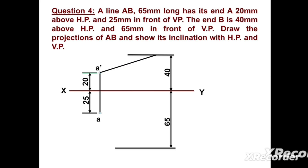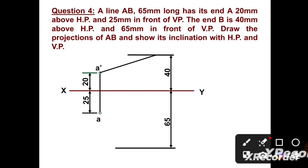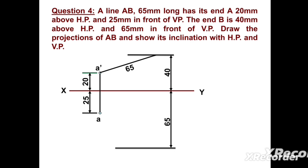Now we can draw one arc with a 65 mm radius, taking A' as the center point, to get an intersecting point. This point is B1'. Now we can draw a horizontal line passing from A' — this will give angle theta. The first answer we get is angle theta equal to 18 degrees, which is the inclination of the line with the horizontal plane.